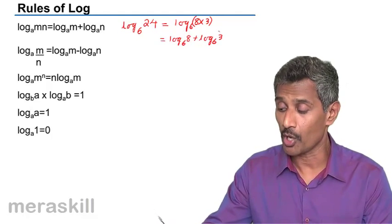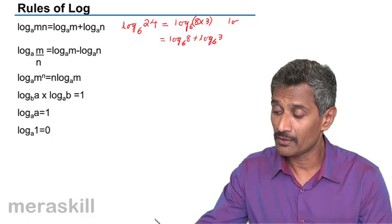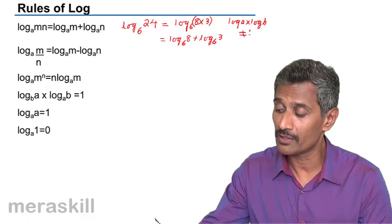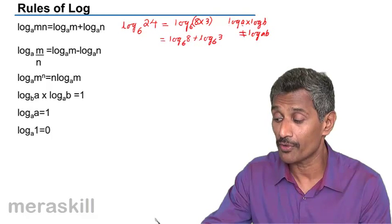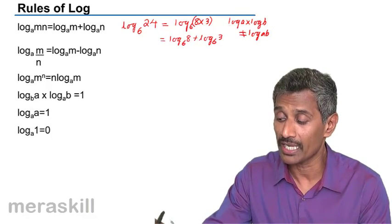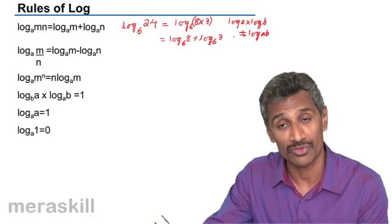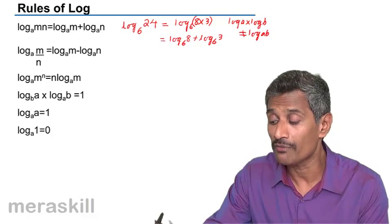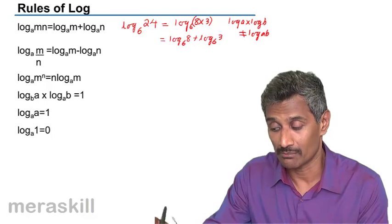But here we need to be very careful that log a into log b should not be mixed with log ab. Whenever you have a situation of log a into log b, say log 8 into log 3, we have to find log 8 separately, log 3 separately and then multiply the values.